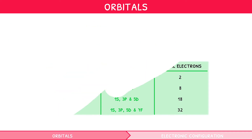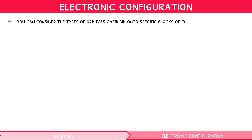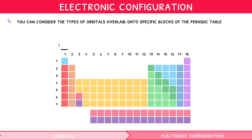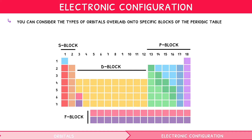But how does this all relate to the structure of an individual atom? This is where electronic configuration comes in. To make this much easier, you can consider the types of orbitals overlaid onto specific blocks of the periodic table. The S block covers the first and second groups. The D block covers the third to twelfth group — the transition elements. The P block covers the thirteenth through the eighteenth group. The F block covers the lower segment of the periodic table, the lanthanides and actinides. You are almost certainly not going to use F orbitals in your IB chemistry exam, so just be aware they exist.